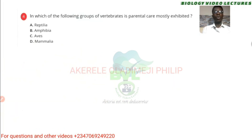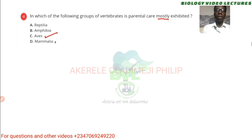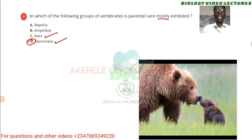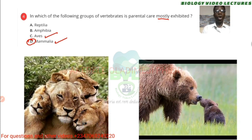Which of the following groups of vertebrates is parental care mostly exhibited? Birds and mammals are the ones that do that. But the one that does it all the way — almost all of the category — is mammals. When it says 'mostly', almost all mammals exhibit parental care. I'm not sure there's any mammal that doesn't exhibit parental care.